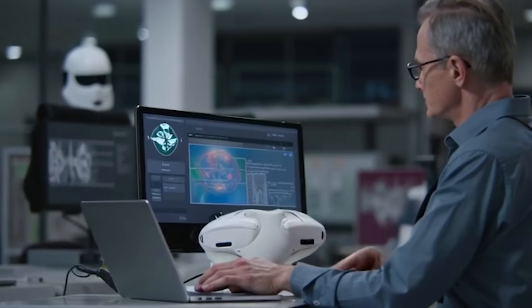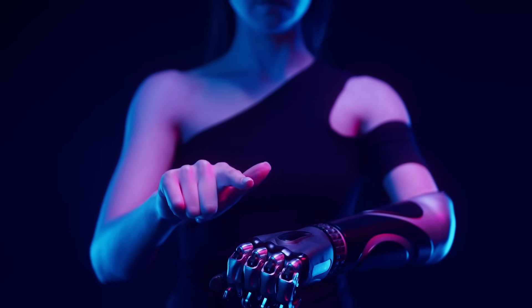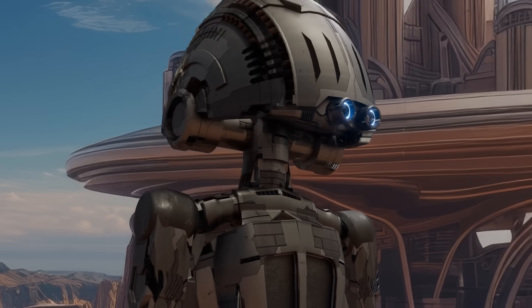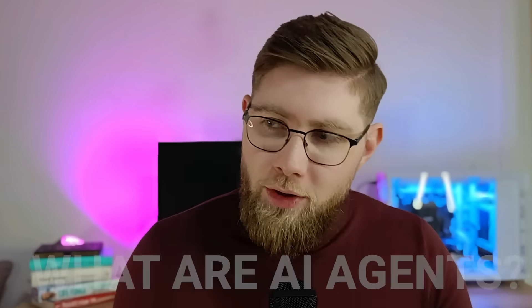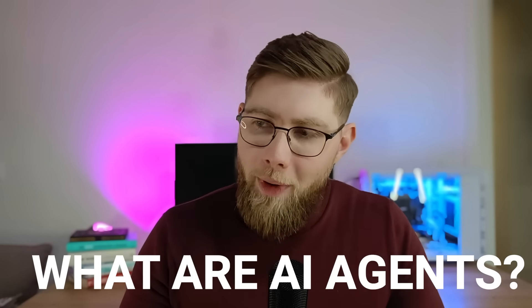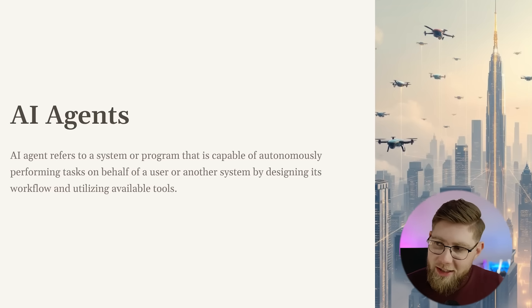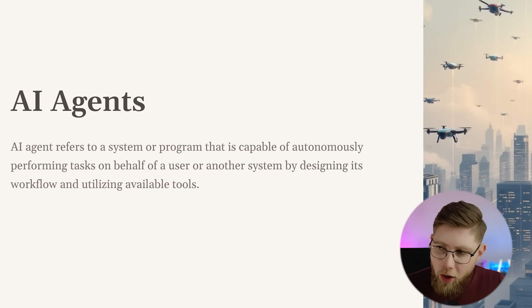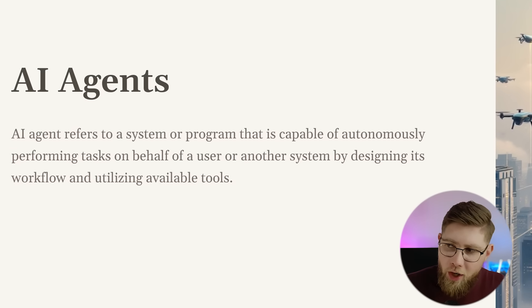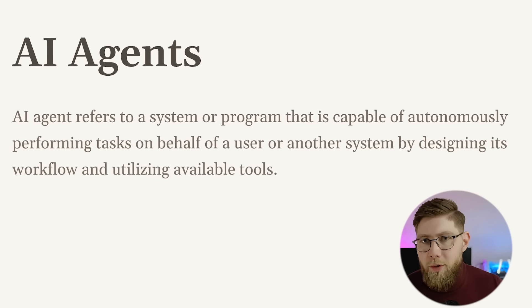The way I want to approach this is: first, looking into what are AI agents; second, how do AI agents work; third, why it matters; what use cases are enabled by AI agents; and then lastly, looking at a few concrete examples of AI agents in action. So let's first explore what AI agents are, and for this I'm borrowing the definition from IBM, which I really like. It goes like this: an AI agent refers to a system or program that is capable of autonomously performing tasks on behalf of a user or another system by designing its workflow and utilizing available tools.